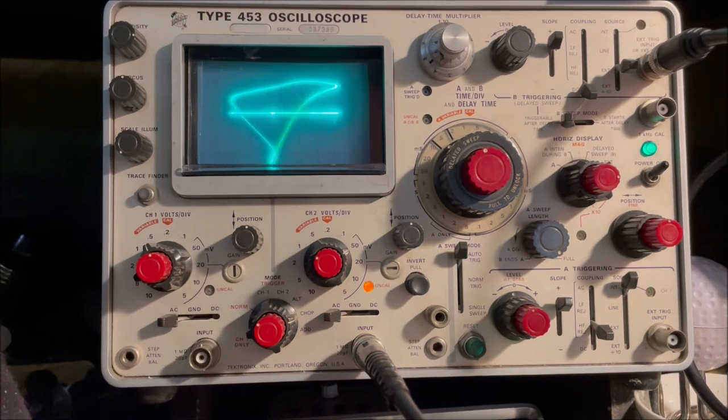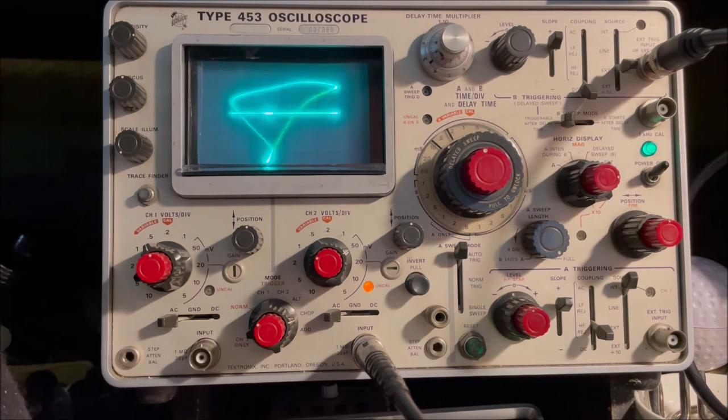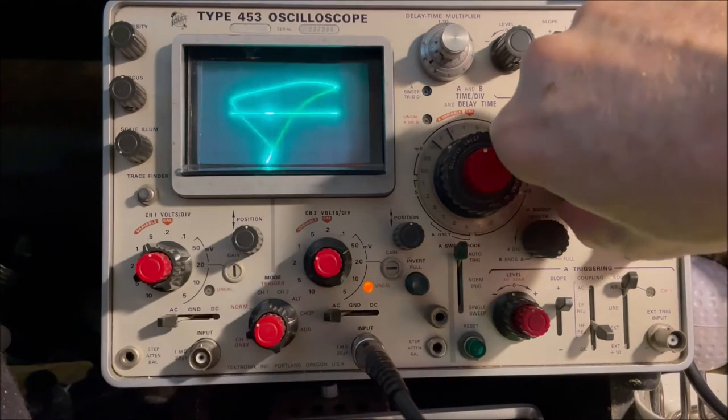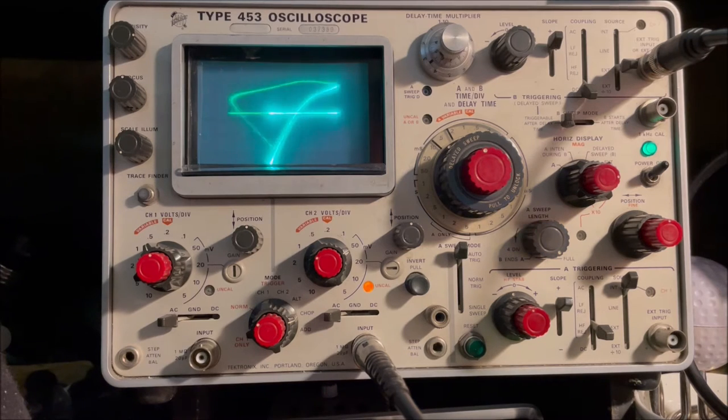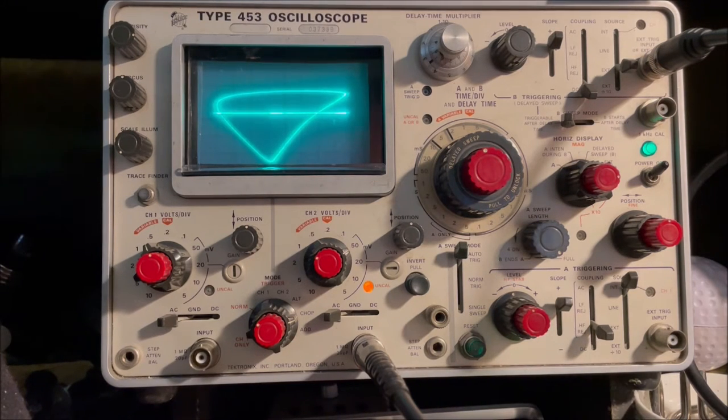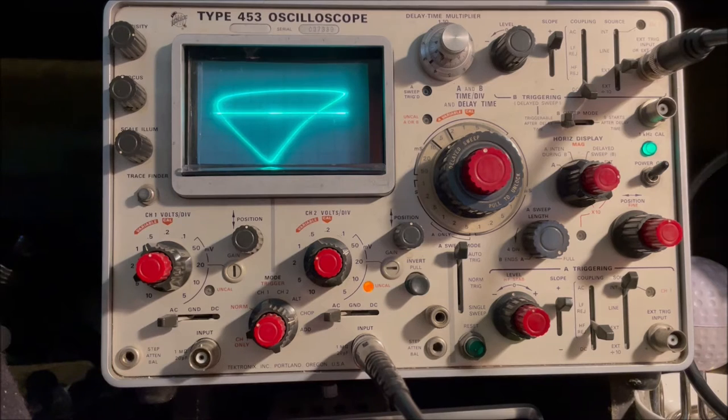And now I'm going to switch on the Dunlop inductor. Hmm, doesn't look much different, does it? So there's red phasel, Dunlop, red phasel, Dunlop. So let's go back to red phasel - I'm going to take it up to 200 hertz. So there's the red phasel, Dunlop, red phasel, Dunlop - still looks the same.